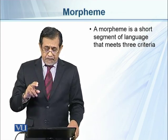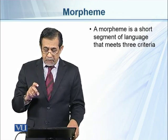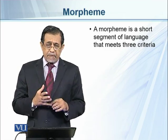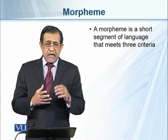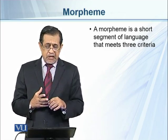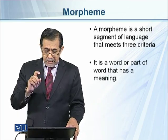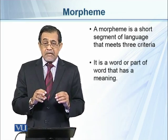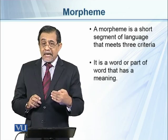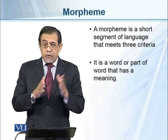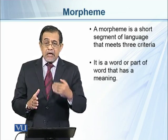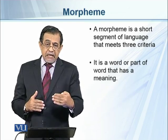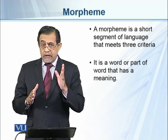Here is a test for a morpheme. A morpheme is a short segment of language that meets three criteria. First, it is a word or part of a word that has a meaning. For example, we say 'talk' and add 'ing' to make 'talking' — both 'talk' and 'ing' have some meaning. Even 'ing' has grammatical meaning, giving the word 'talk' a progressive meaning.